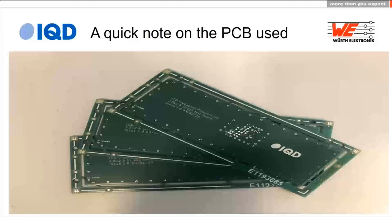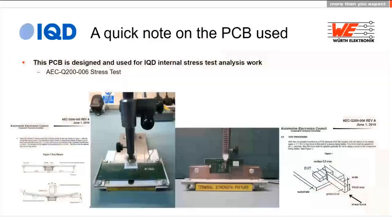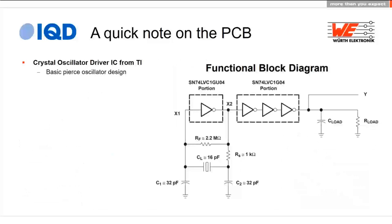I'll focus on one PCB for these measurements. I can't discuss a customer's PCB, so instead I'm using a PCB from our own laboratory — part of our product approval process used for board flex and termination strength testing. It's a basic circuit: a crystal oscillator driver from Texas Instruments, a basic Pierce oscillator design. X1 is the amplifier with a feedback loop containing the crystal, and a few buffers isolate the feedback loop from the outside world.